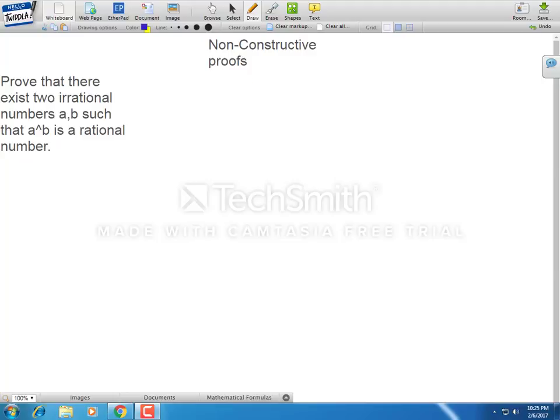In fact, over here I have an example of a non-constructive proof. The question is, prove that there exist two irrational numbers, a and b, such that a raised to b is a rational number.